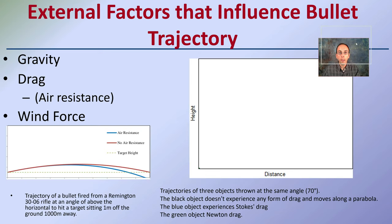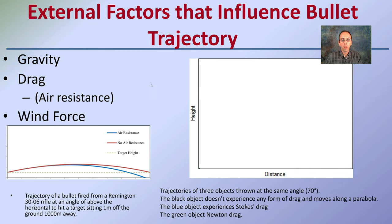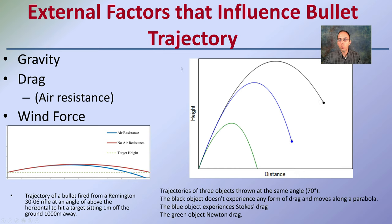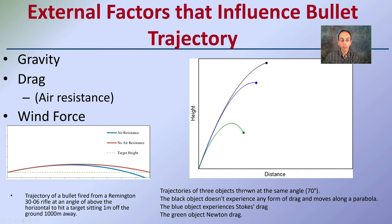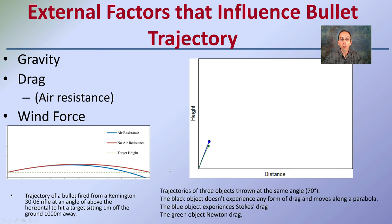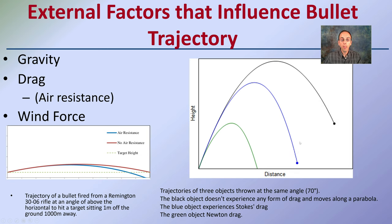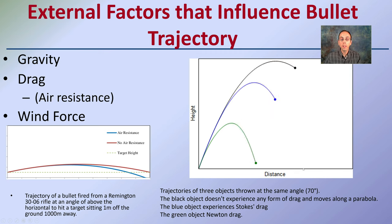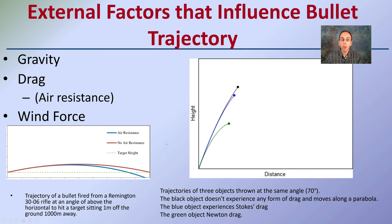External factors that influence bullet trajectory are gravity, drag, and wind force. For comparison, we can see how, all fired at the same angle, we can have some different trajectories and very different distances. These are trajectories of three objects launched at the same angle. The black object doesn't experience any form of drag and moves along a parabola — showing the extreme example of how far it would travel with no drag. The blue and green show the impact of drag factors and how they can vastly decrease the distance. Air resistance, no air resistance, and target height all play into the final trajectory of that bullet.